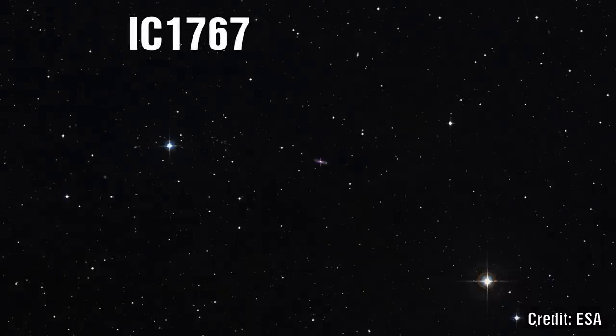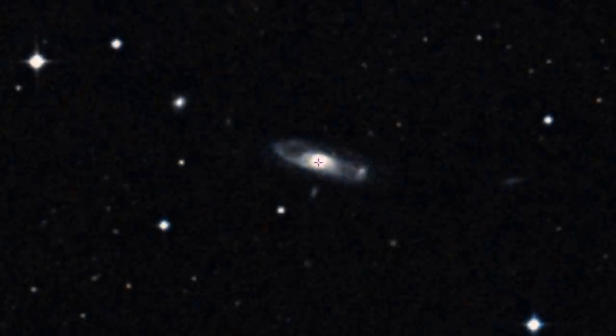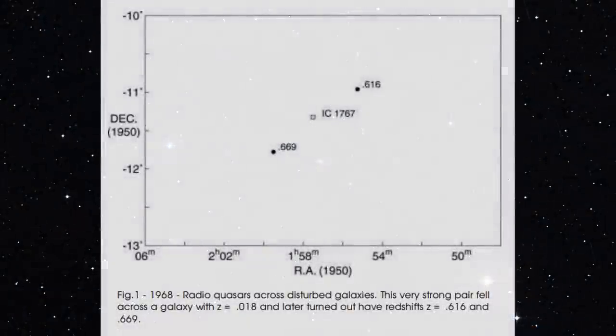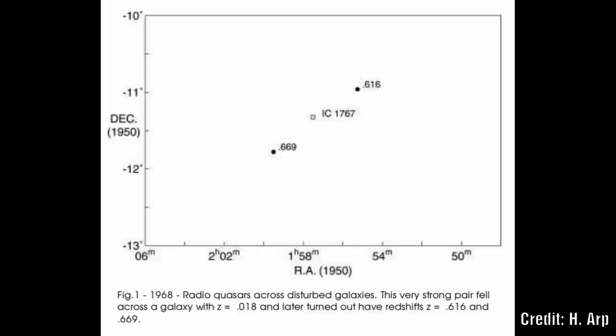IC 1767. Here we find two radio quasars located near IC 1767. Both these have a redshift of 0.67 and 0.62. And as a reminder these types of quasars can vary from a redshift of 0.1 to 2.4. So the chances of finding two quasars so close in redshift and then across from each other with a galaxy bang in the middle?